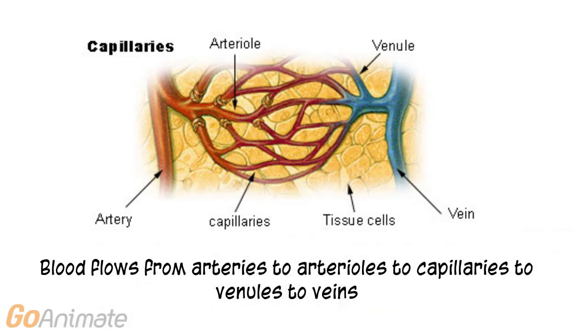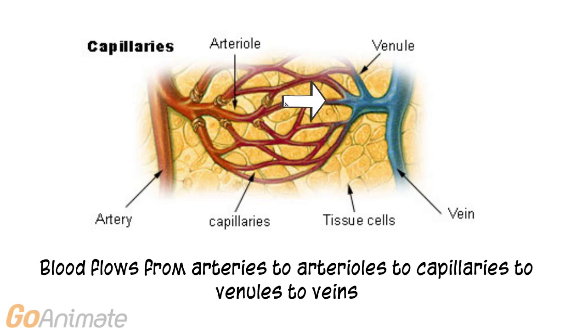Blood flows from arteries, which branch to form smaller vessels called arterioles, to capillaries, to venules, and then finally to veins as it travels back to the heart.